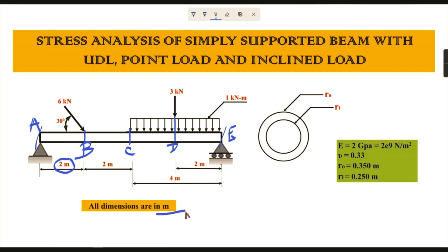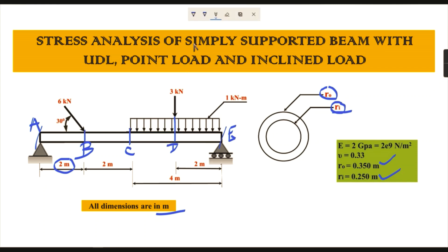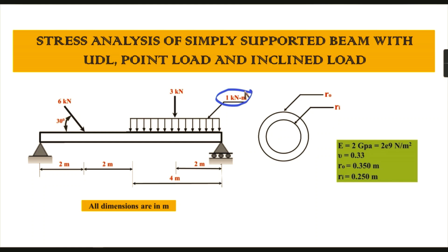All dimensions are in meters. The cross-section for this beam is a hollow circular cross-section. The outer radius is 0.350 meters and the inner radius is 0.250 meters. Three types of loads are acting: one is UDL, another is a point load, and another is also a point load but in an inclined position at an angle of 30 degrees.